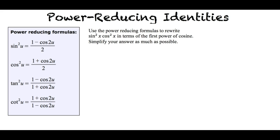Use the power reducing formulas to rewrite sine squared x times cosine squared x in terms of the first power of cosine. Simplify your answer as much as possible. Rewrite sine squared x times cosine squared x using power reducing formulas for sine and cosine and simplify.